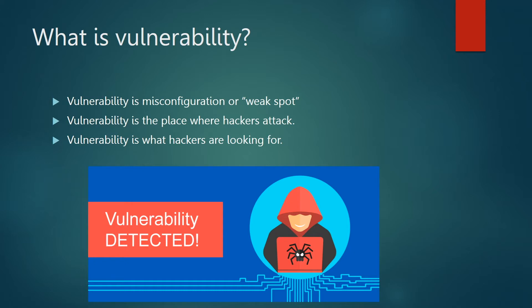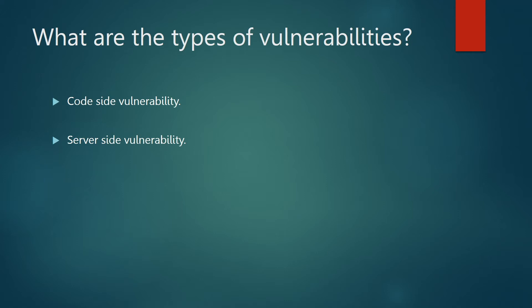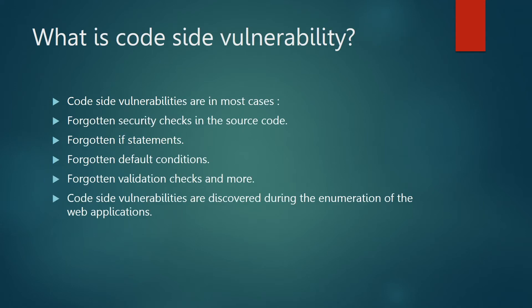The hacker's job is not to go through the wall — the hacker's job is to bypass it. Hackers are looking for the weak spot, the easiest way to break in. There are two types of vulnerabilities: code-side and server-side. Code-side vulnerabilities are in most cases forgotten security checks in the source code — checks that would prevent injecting commands or special parameters. Where those checks are not configured or forgotten, the system doesn't restrict injection, making it vulnerable to cross-site scripting, SQL injection, command injection attacks, and many more.